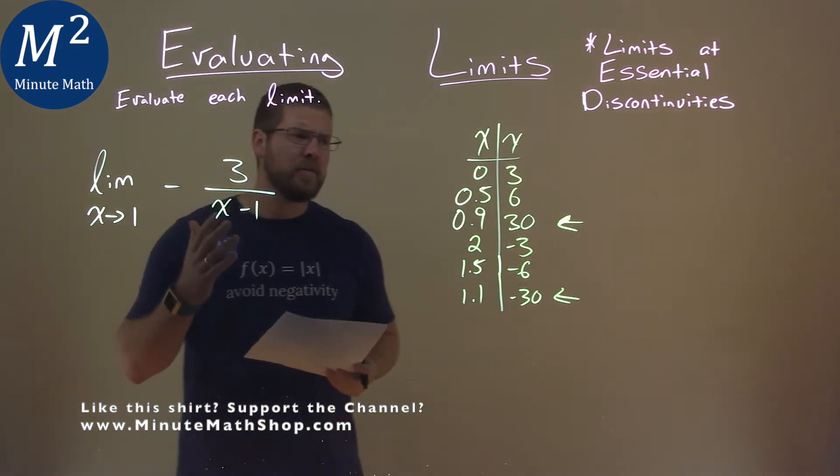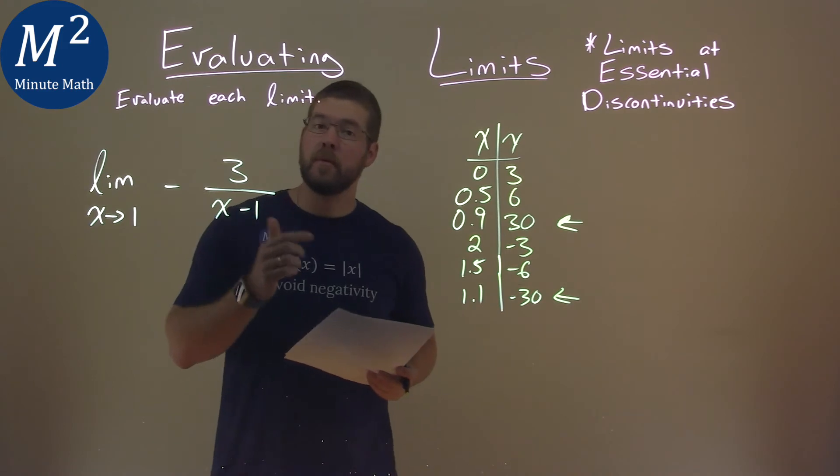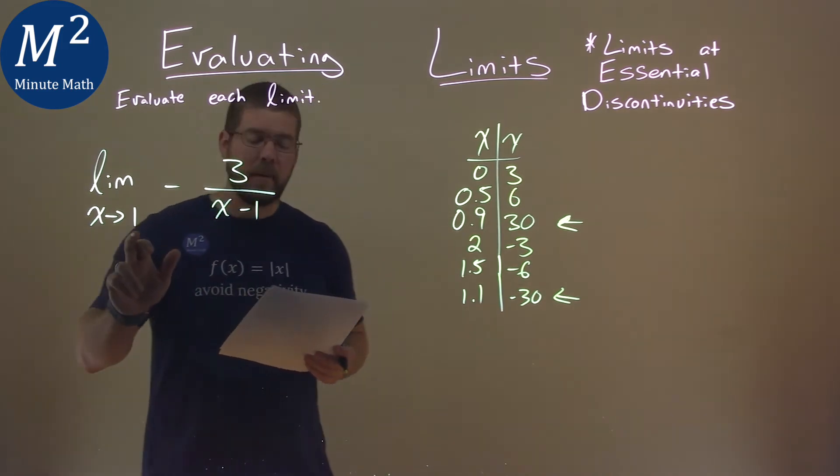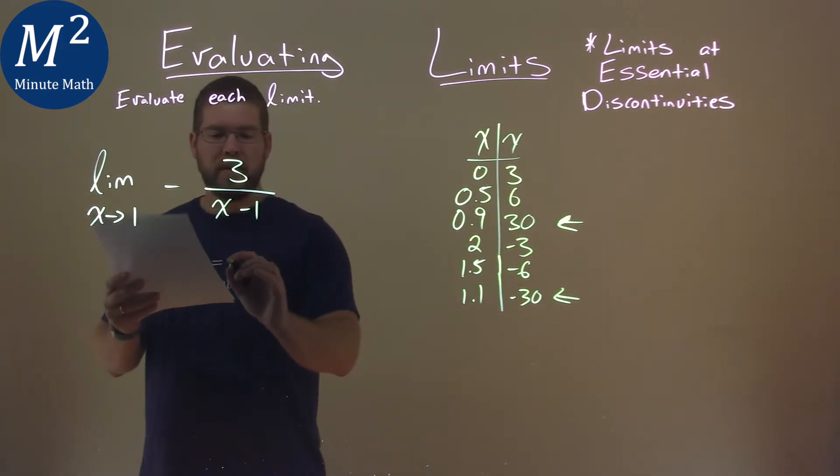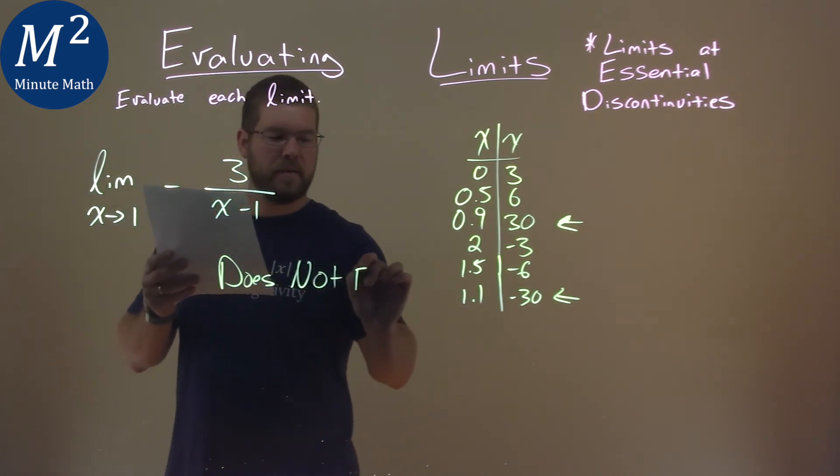So what does that tell us? It tells us that if we approach from the left, it's a different limit than approaching from the right. So when that happens at a specific value, we would say that this limit does not exist.